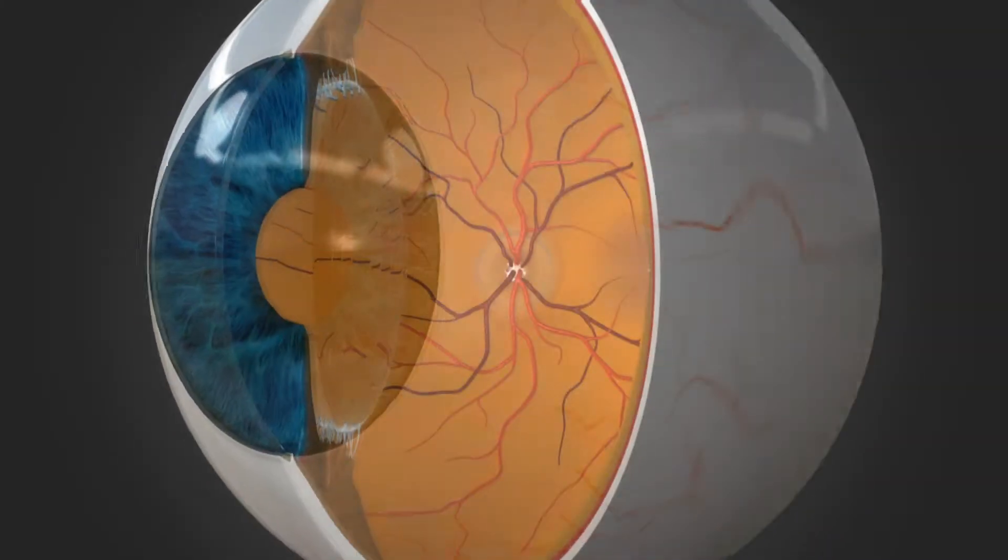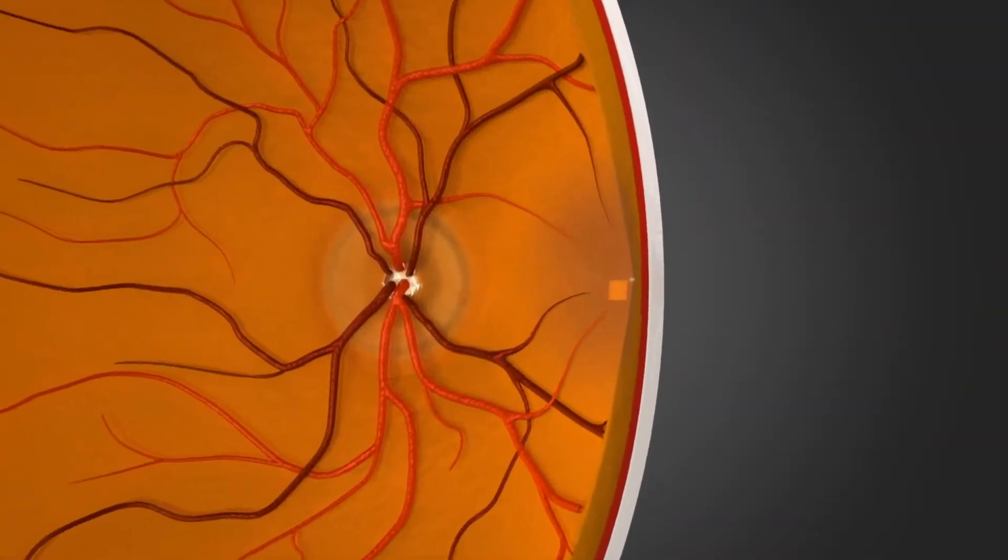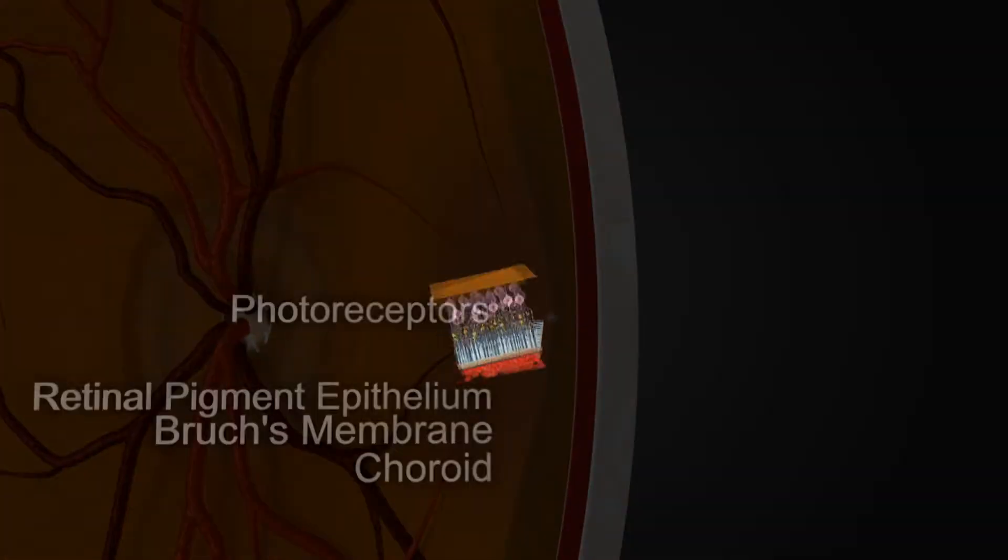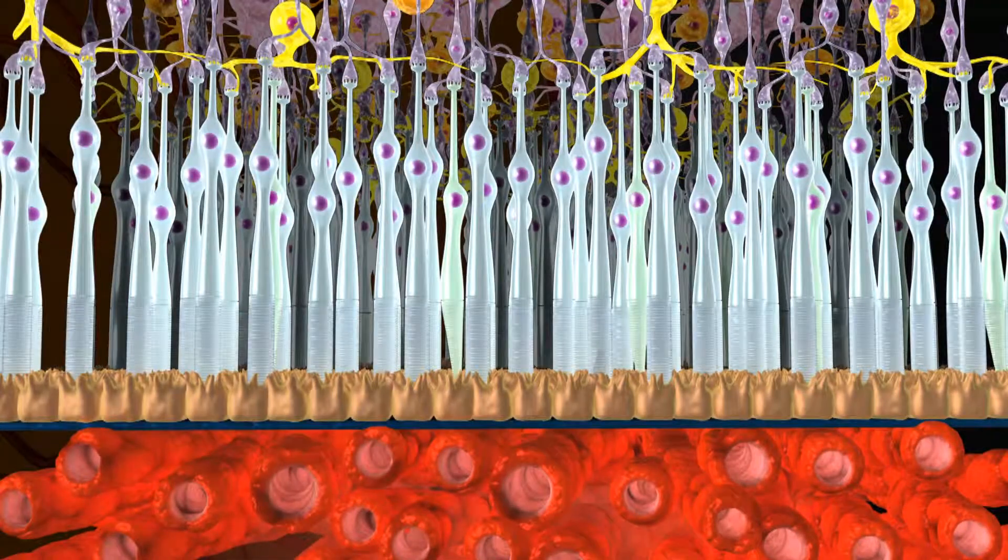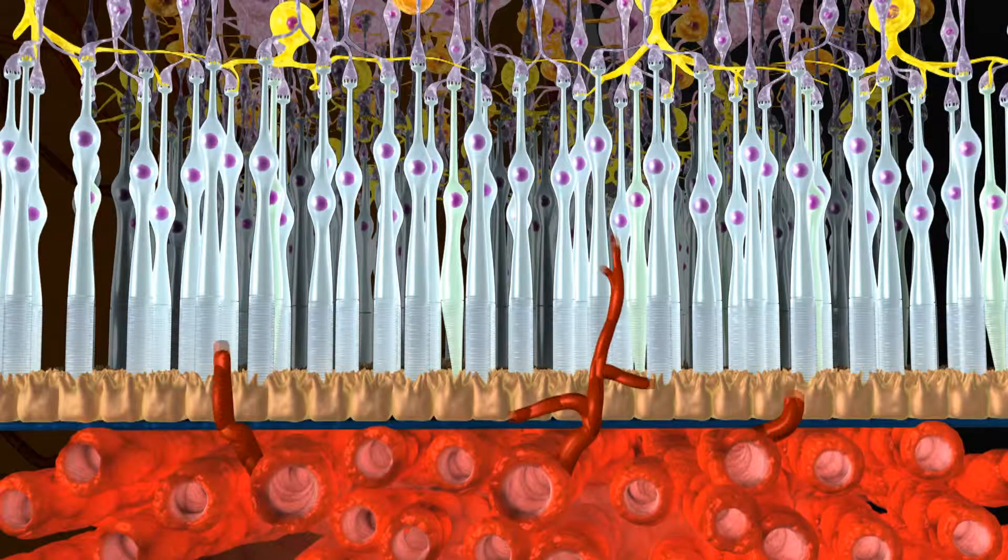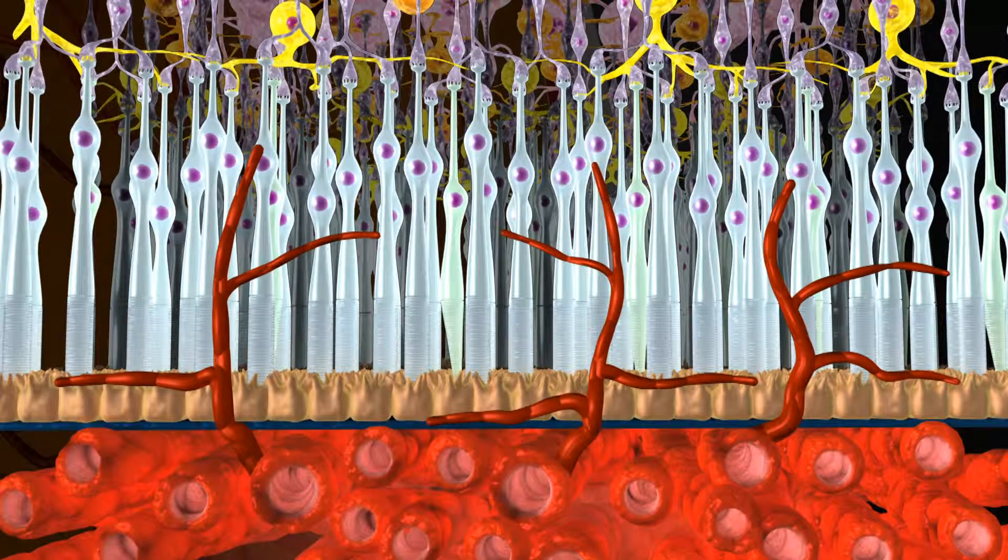In the wet type of macular degeneration, there is bleeding and leakage of fluid in and under the retina. This is caused by VGF secretion and consequent growth of abnormal blood vessels from the cored under the retina.